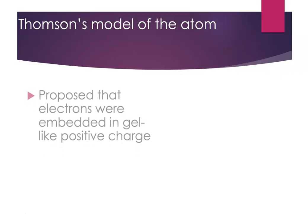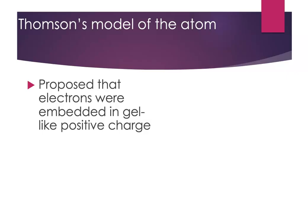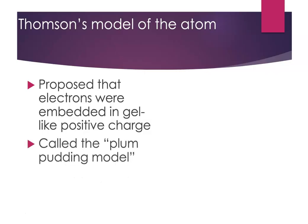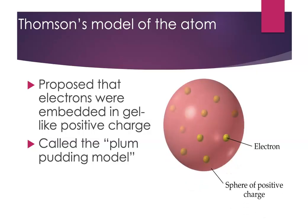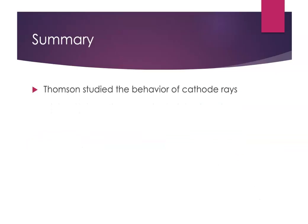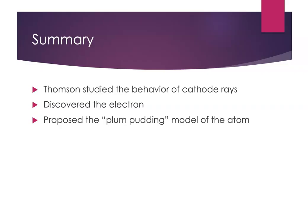Thomson proposed that the electrons were embedded in a sphere of diffuse, gel-like positive charge — think of jello. This became known as the plum pudding model, named after a popular British dessert. You might think of it as fruit in jello: positive charge spread throughout the entire sphere, with tiny electrons floating around in it. In summary, Thomson studied cathode rays, showed all atoms contain electrons, and proposed the plum pudding model. Around 1898, that was the model of the atom — and what happens next is testing that model, which will be covered in another webcast.